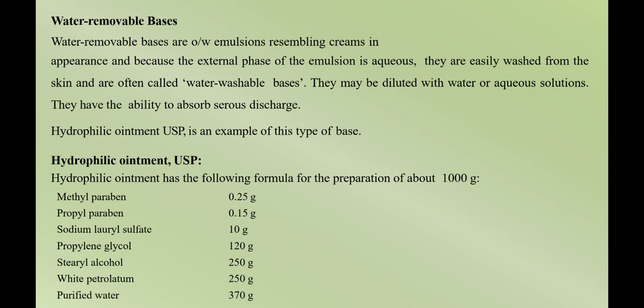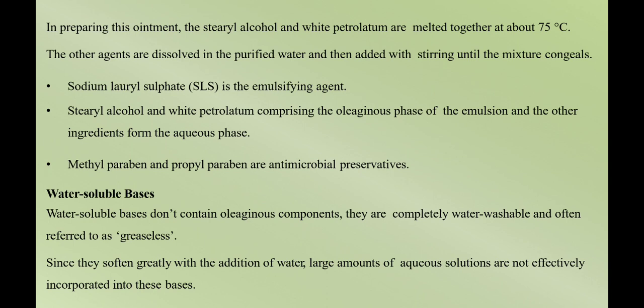In hydrophilic ointment USP, methylparaben and propylparaben are the preservatives. Other ingredients include sodium lauryl sulfate, propylene glycol, stearyl alcohol, white petrolatum, and purified water. In preparation, you heat to 75°C, dissolve the other agents in purified water, and with continuous stirring, add this mixture. Sodium lauryl sulfate acts as an emulsifying agent; stearyl alcohol and white petroleum act as the base; and methylparaben and propylparaben are the preservatives.